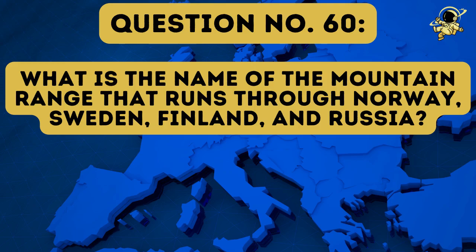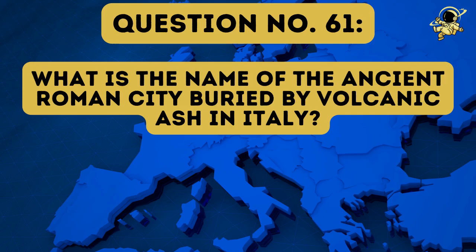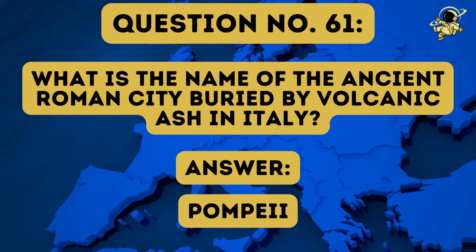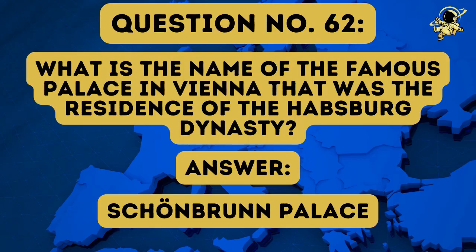Question number sixty: What is the name of the mountain range that runs through Norway, Sweden, Finland and Russia? And the answer to question number sixty is the Scandinavian Mountains. What is the name of the ancient Roman city buried by volcanic ash in Italy? The answer to question number sixty-one is Pompeii. Question number sixty-two: What is the name of the famous palace in Vienna that was the residence of the Habsburg dynasty? And the answer to question number sixty-two is the Schönbrunn Palace.